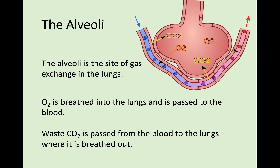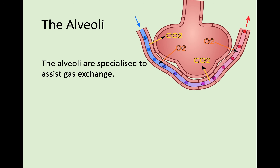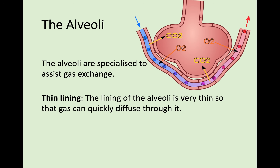Let's have a look at how the alveoli are actually good at doing this, because you just need to know that the alveoli is the site of gas exchange in the lungs. That's its sole purpose — but what makes it good at it? The first thing is thin lining. The lining of these alveoli is very, very thin. As with capillaries, very thin walls allow gas to quickly diffuse through. The same is totally true of the alveoli — very thin lining so that gas can move and diffuse across it.